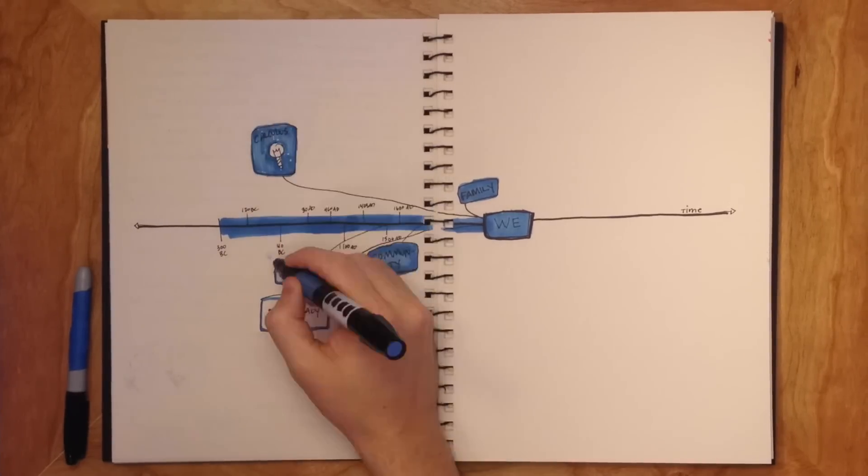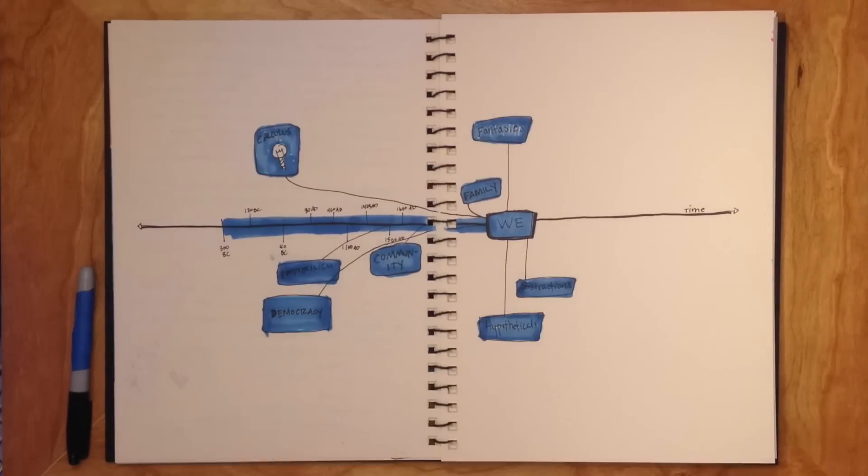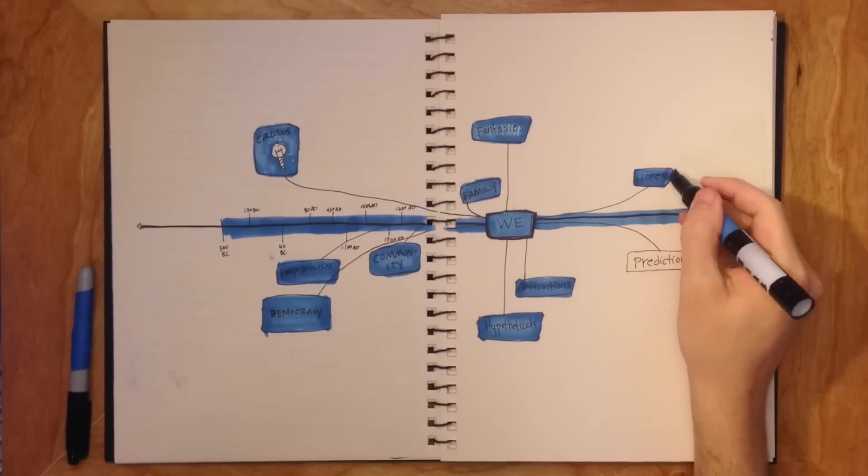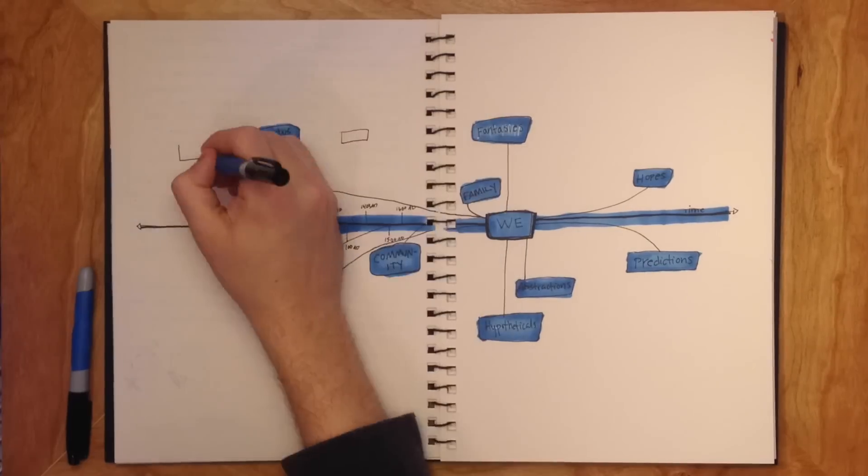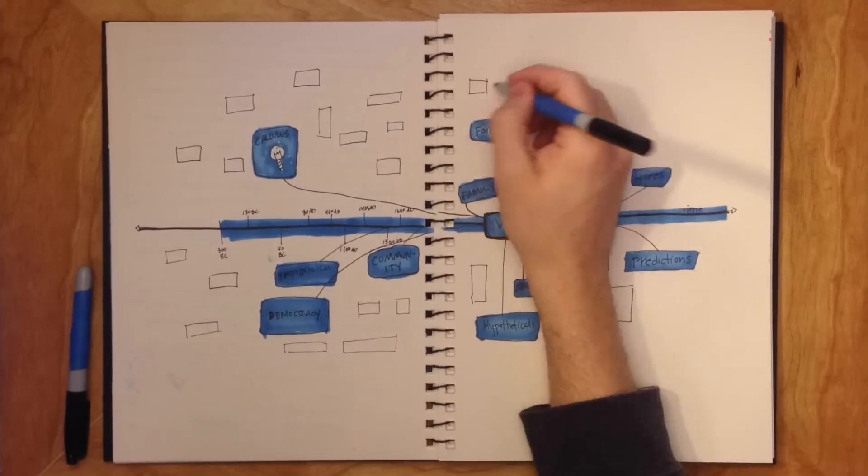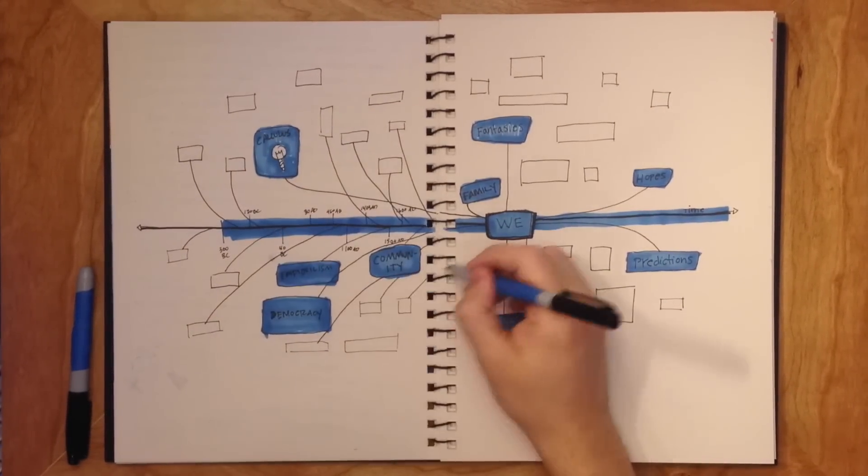We can also experience abstractions, fantasies, hypotheticals, and then we can extend ourselves forwards into hopes and predictions. What this ends up looking like is that our identities do not progress forward linearly over time but rather they expand in every direction from the present.